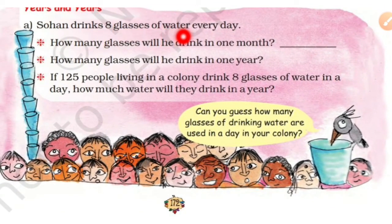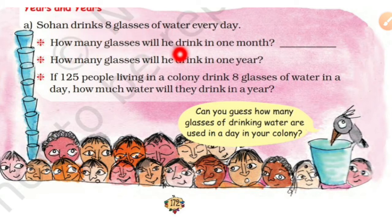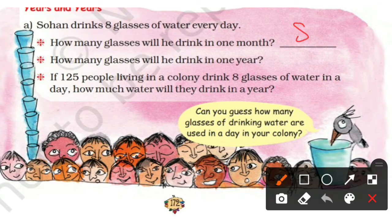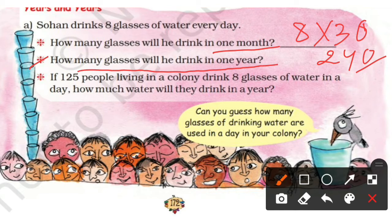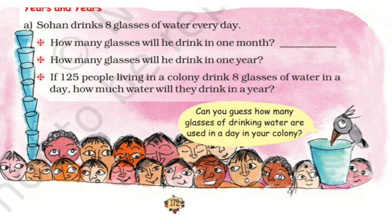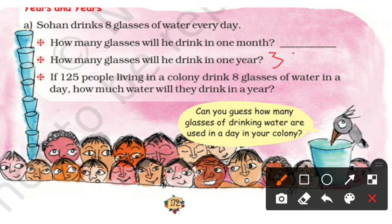Sohan drinks 8 glasses of water every day. How many glasses will he drink in 1 month? 1 month mein 30 days hote hain, so 8 ko 30 se multiply karenge — 240 glasses of water he will drink in 1 month. How many glasses will he drink in 1 year? 1 year mein 365 days hote hain, so 365 ko 8 se multiply karenge.